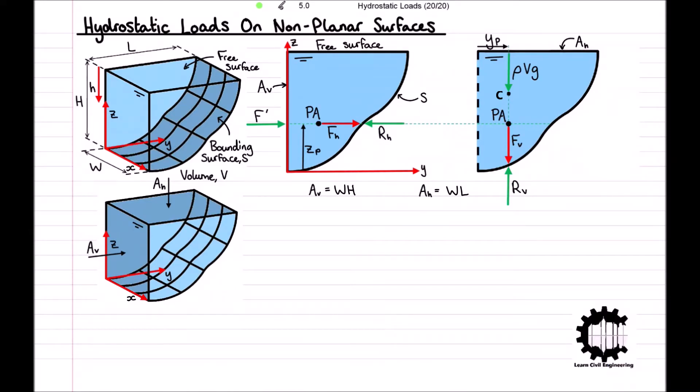Now considering the horizontal forces that are acting on the volume of liquid, we have the reaction force RH and also the force F' that is being applied by the liquid on the left of AV to the liquid on the right of AV. We know that the volume of liquid is in static equilibrium and therefore all horizontal forces acting on this liquid must be in equilibrium.